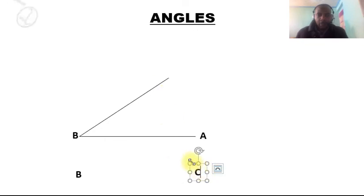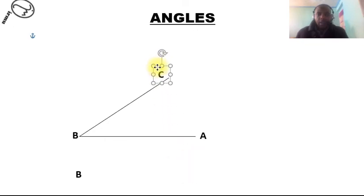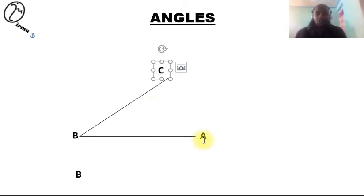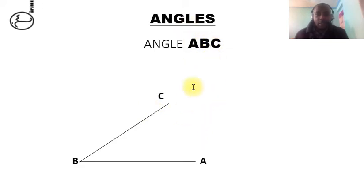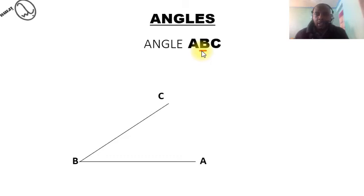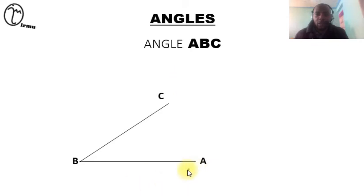I take line BC and bring it here and join it. Now we have an angle which has been formed by joining line AB and BC, which is called angle ABC. To identify the angle that has been formed, the middle letter — letter B — is the one that identifies that angle, so we can call it angle B.